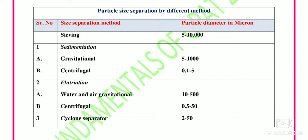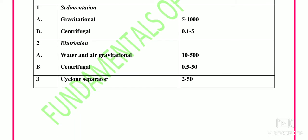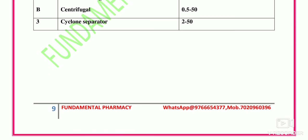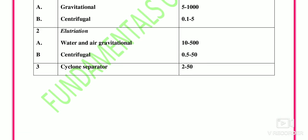Particle size separation by different methods and the particle diameter range each can separate: Sieving separates particles in the range of 5 to 10,000 micron. Sedimentation — gravitational separates 5 to 10,000 micron; centrifugal separates 0.1 to 5 micron. Elutriation — water and gravitational separates 10 to 500 micron; centrifugal separates 0.5 to 50 micron. Cyclone separator separates particles in the range of 2 to 50 micron. This concludes the topic of size separation.